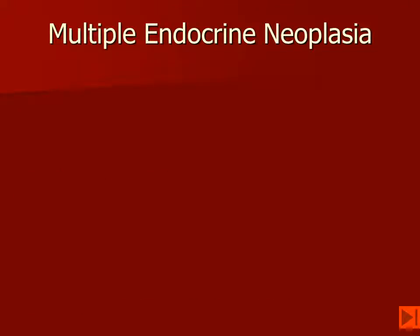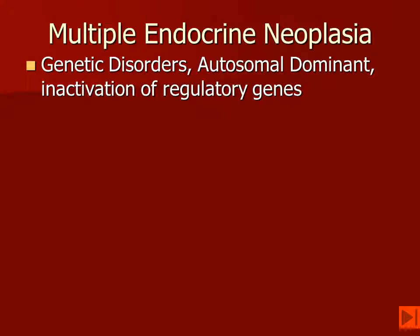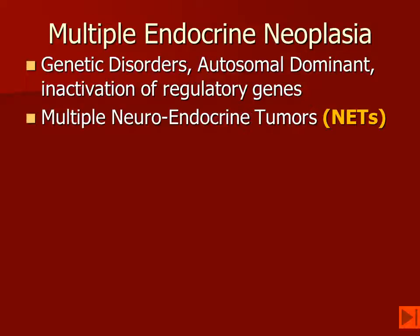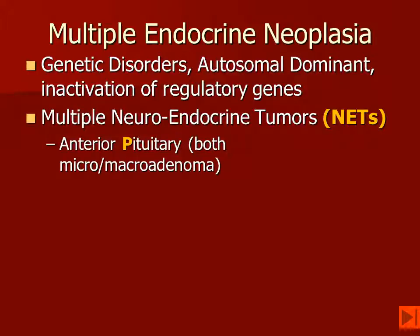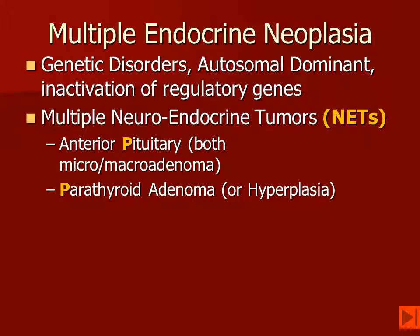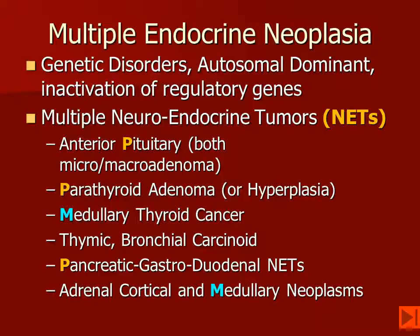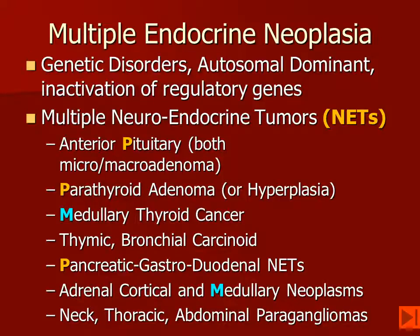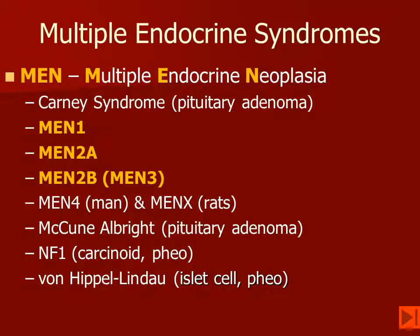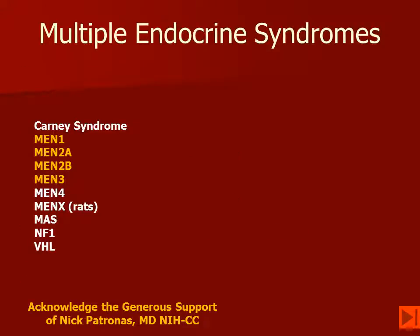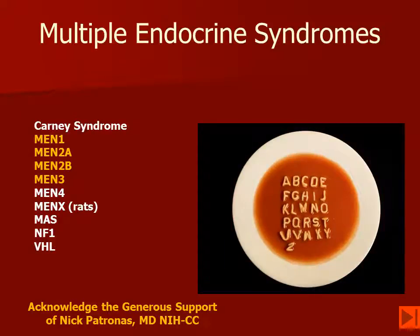Multiple endocrine adenopathy, or multiple endocrine neoplasia syndromes, are autosomal-dominantly inherited disorders that involve inactivation of regulatory genes. These patients develop multiple neuroendocrine tumors, or NETs. These include anterior pituitary adenomas, both micro and macro adenomas, parathyroid adenomas or hyperplasia, medullary thyroid cancer, thymic and bronchial carcinoids, pancreatic or gastroduodenal neuroendocrine tumors, adrenal cortical and medullary neoplasms, and neck, thoracic, and abdominal paragangliomas. These MEN syndromes include up to 8, 9, or 10 different disorders, but we're going to focus on 4 of them.